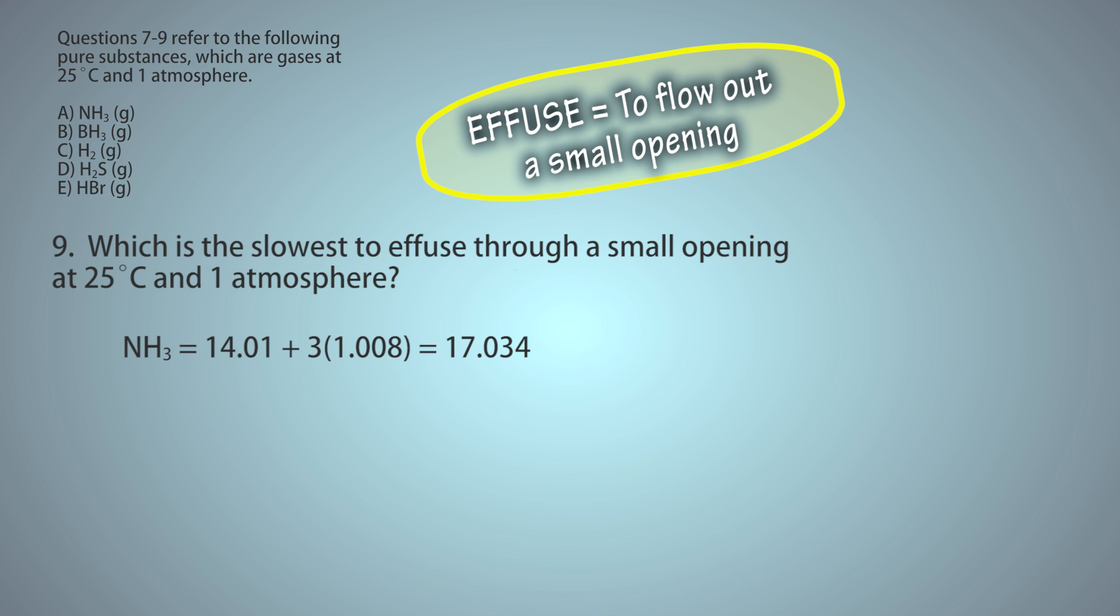NH3 equals 14.01 plus 3 times 1.008 equals 17.034.